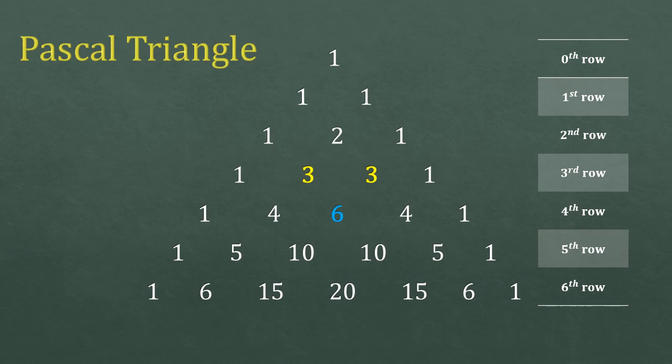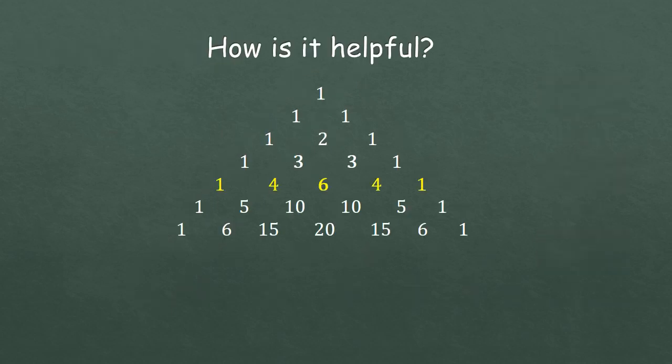Likewise, you can see the one written at the beginning of every row. That is the zeroth term of every row, not the first. Alright, so this is all about this triangle. Now one question. How is it helpful?